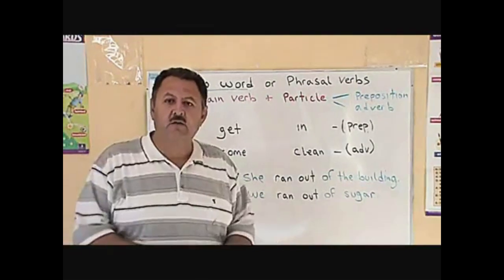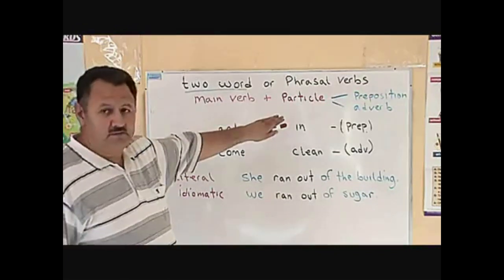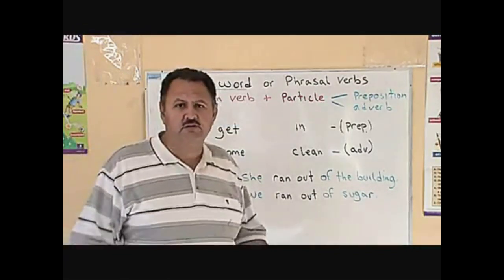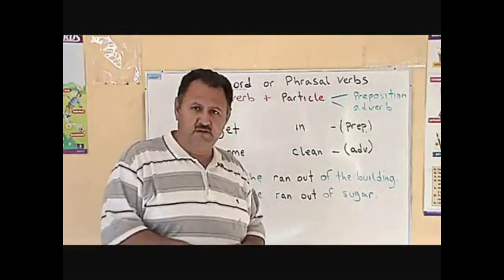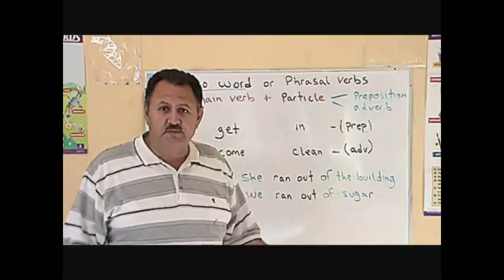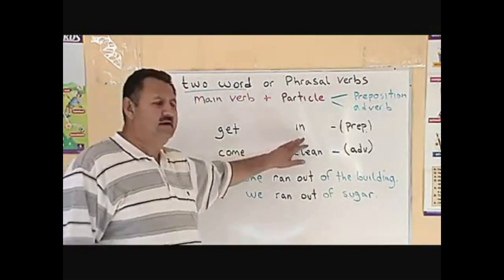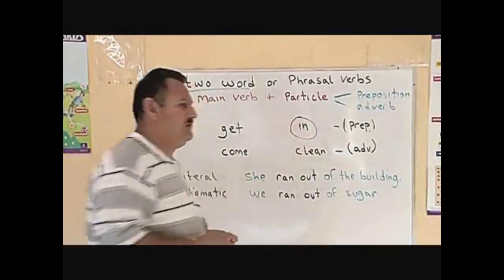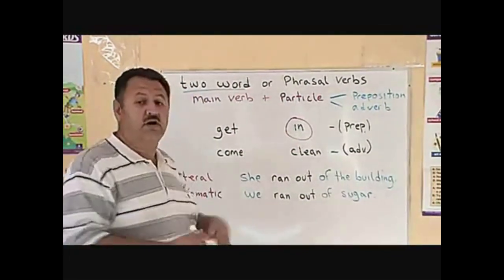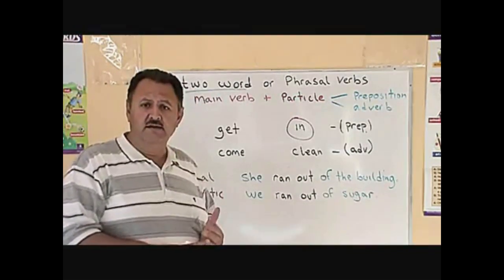Phrasal verbs are made up of a main verb plus a particle. What is a particle? A particle is a preposition and an adverb. An example of a preposition: in the phrasal verb get in, in is the preposition. There are other prepositions like out, on.